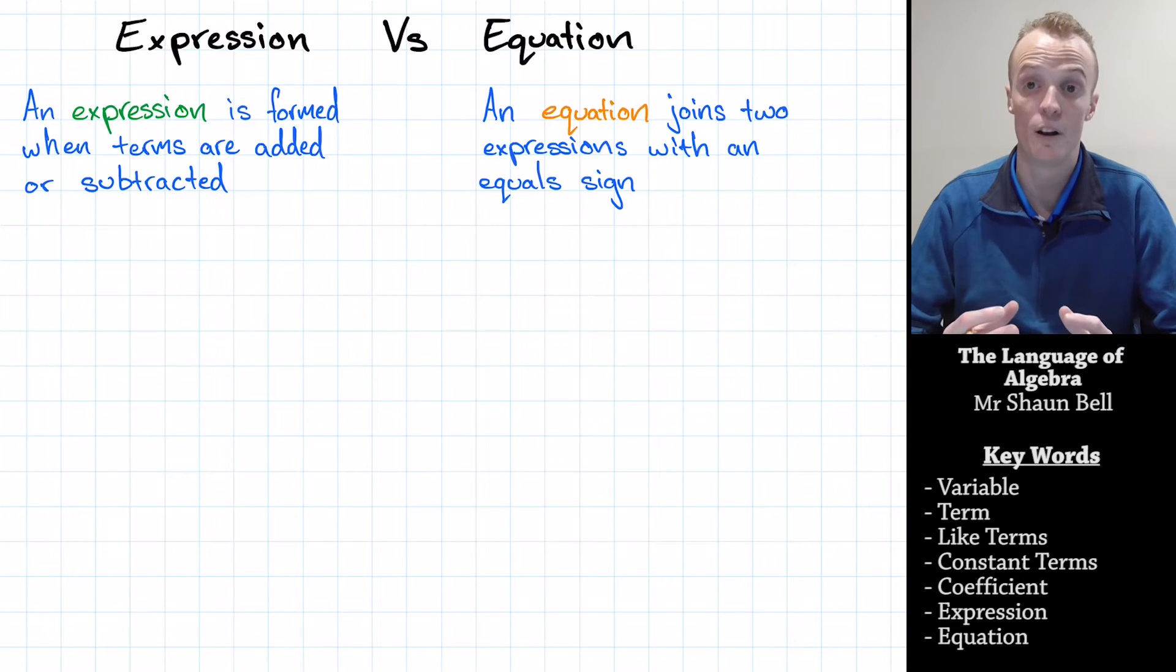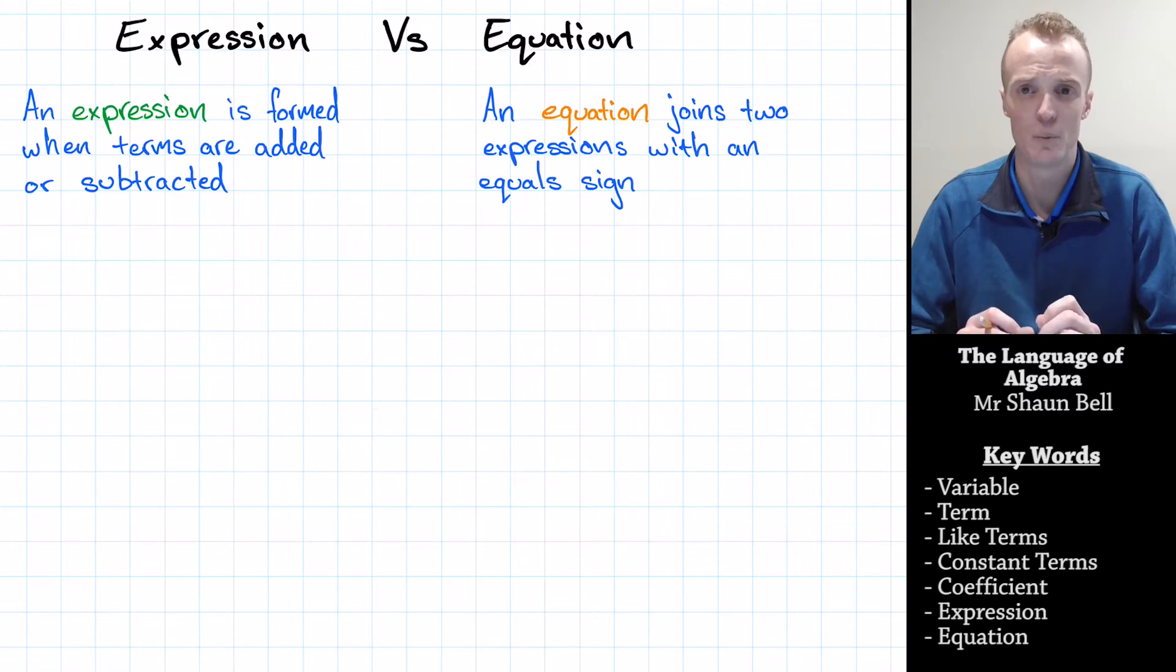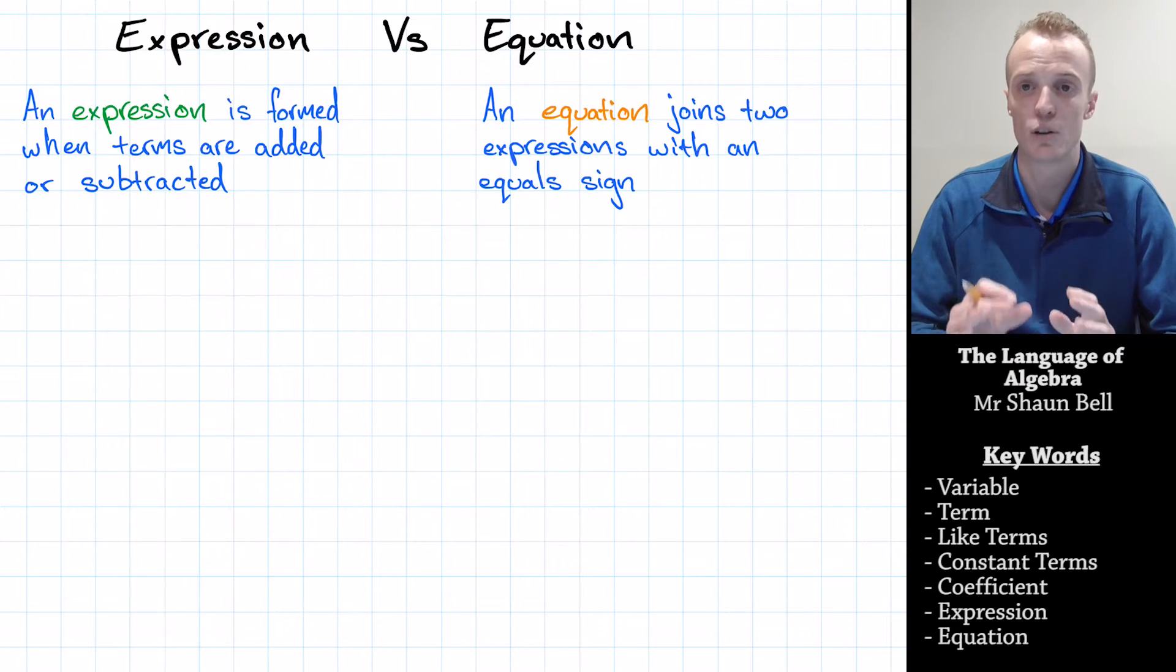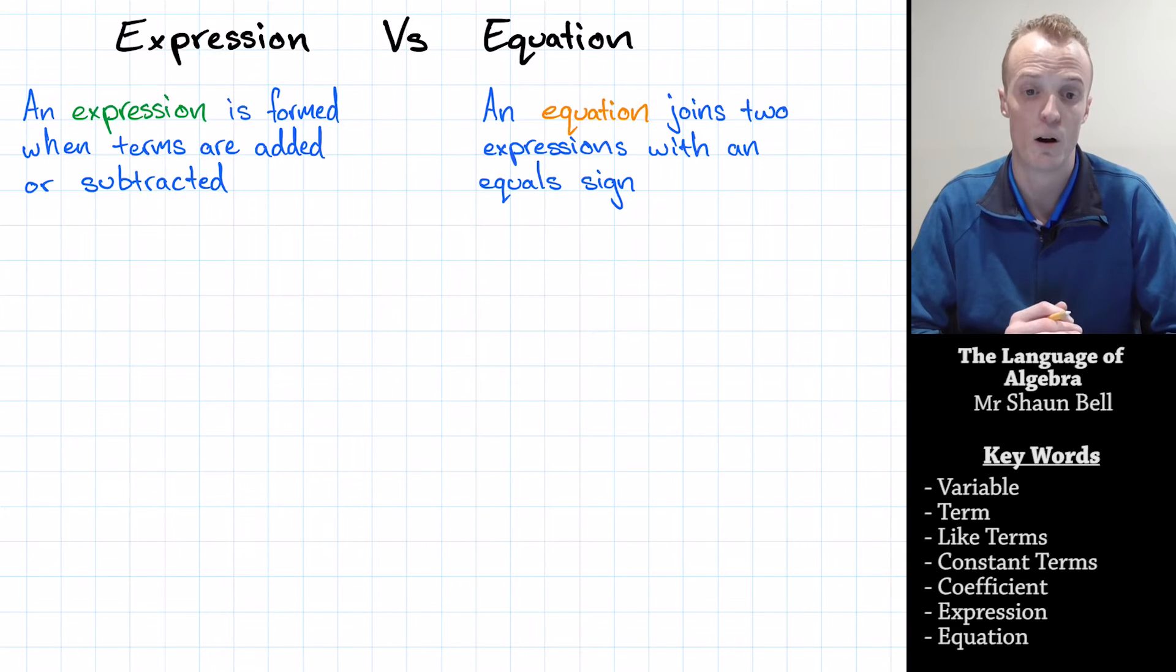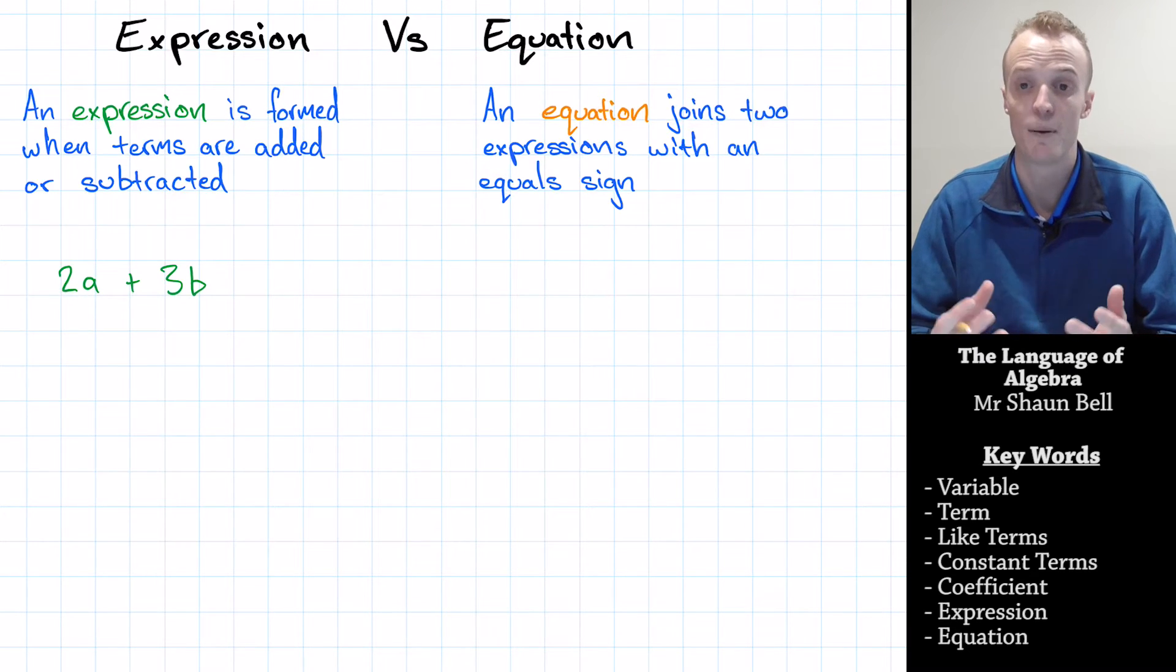Now, we've got an understanding of some of the common words we use to describe an algebraic statement. There are two common algebraic statements that exist: expressions and equations. There are actually more than two when we bring in inequalities later on, but the two most common that we're going to worry about right now are the expressions and equations. Now, an expression is what we had before. An expression is formed by a group of terms that are simply added and subtracted to each other. An example of this would be 2a plus 3b. I've got two terms here that are being added together, so this we refer to as an expression.